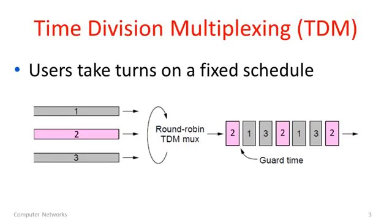In time division multiplexing, this is simply sharing over time. Different users take turns on a fixed schedule at different times. We have traffic coming in from three users on the left, and a portion of the traffic is taken from each of those users in turn. This diagram shows the evolution over time of how the users are sharing one link or channel.